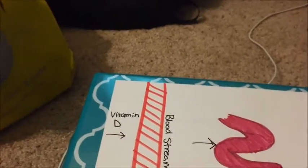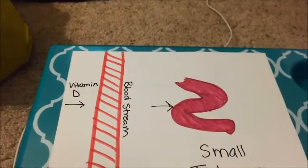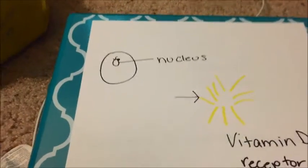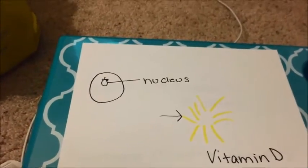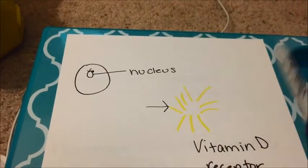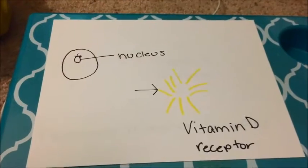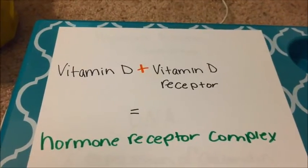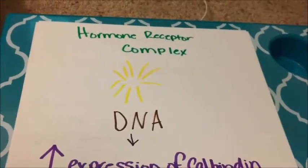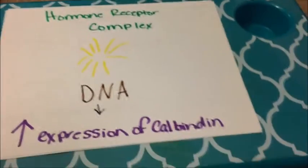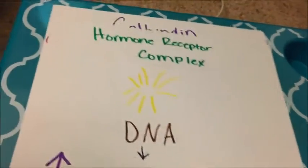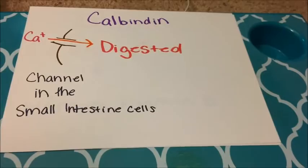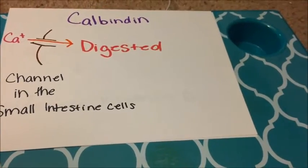So now that calcidiol is taken care of, let's go back to vitamin D. When vitamin D enters the bloodstream, it goes to the small intestine via the bloodstream. In the small intestine, it goes to the nucleus of the cells, where it then binds to the vitamin D receptor. When it combines with the vitamin D receptor, it makes a hormone receptor complex. The hormone receptor complex will bind with DNA to upregulate the expression of calbindin, which is basically a channel in the small intestine cells that will allow calcium to enter and to be absorbed.